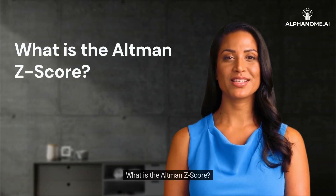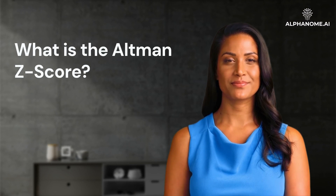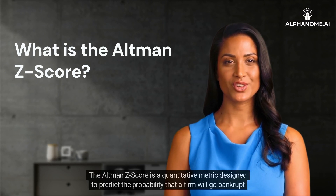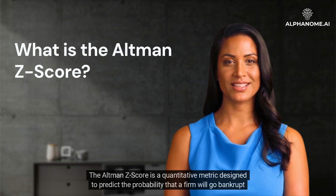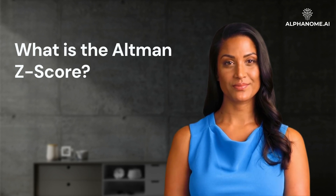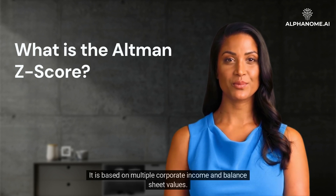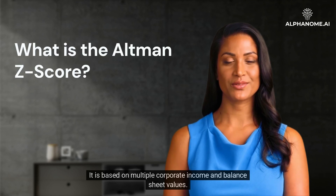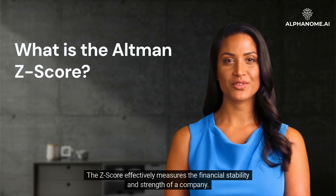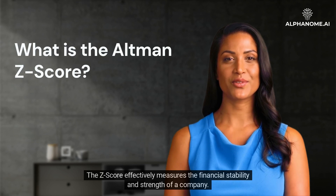What is the Altman Z-Score? The Altman Z-Score is a quantitative metric designed to predict the probability that a firm will go bankrupt within two years. It is based on multiple corporate income and balance sheet values. The Z-Score effectively measures the financial stability and strength of a company.